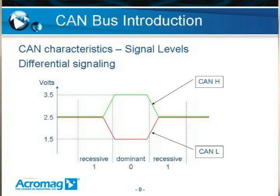The two logic states on the bus, commonly known as logic high or low, are termed dominant and recessive by the CAN bus specification. The dominant is a logic low — when the bus is in the dominant state, CAN high is driven to three and a half volts and CAN low is pulled down to one and a half volts. In the recessive state, neither CAN high nor CAN low is driven, and the bus floats to its midpoint level of about two and a half volts.